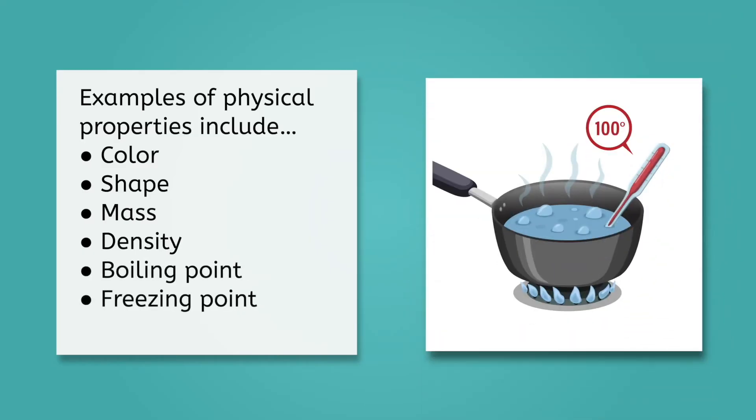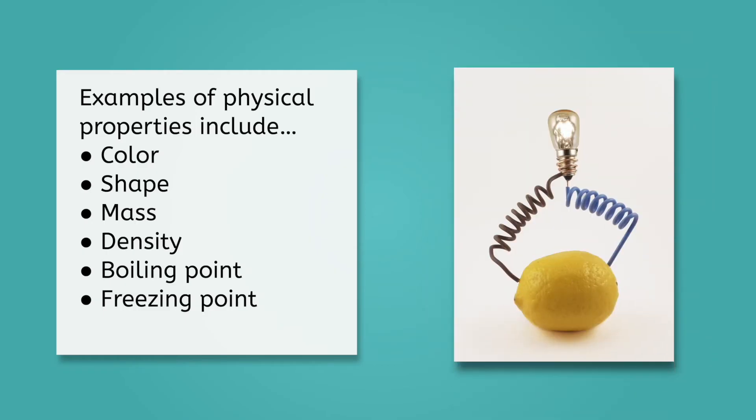This means that boiling point and freezing point are also physical properties. Another example of a physical property is the ability to conduct electricity. Have you ever tried the good ol' lemon or potato as a battery electricity experiment? Well, in these situations, the lemon or potato are not changing while the electricity flows through them. This means conductivity is a physical property.